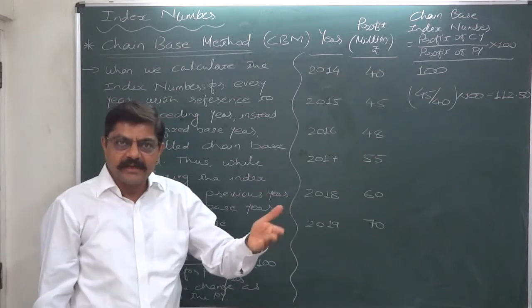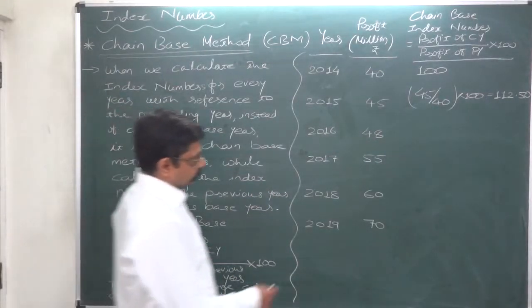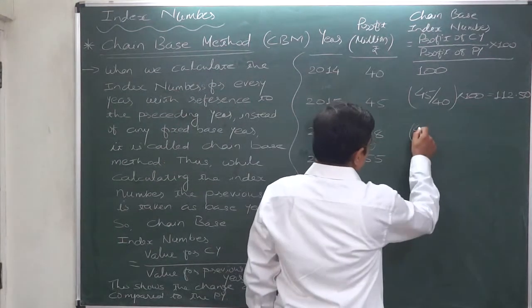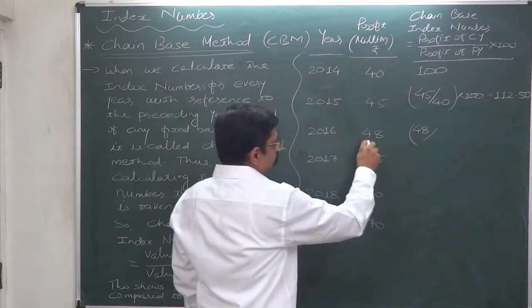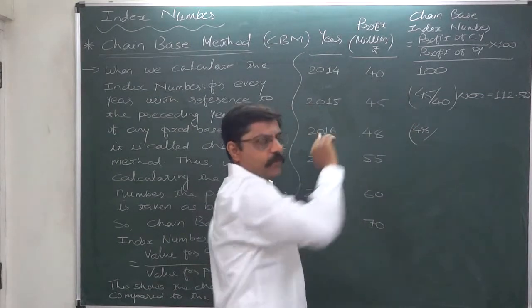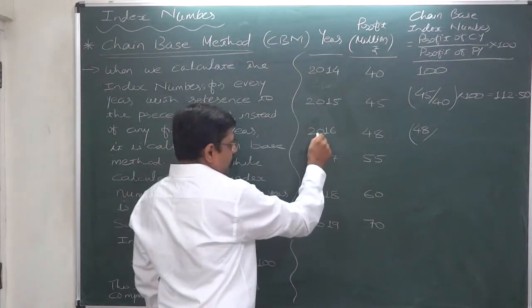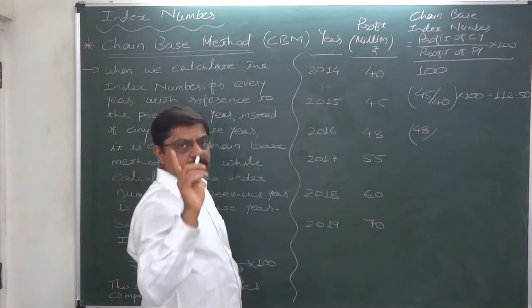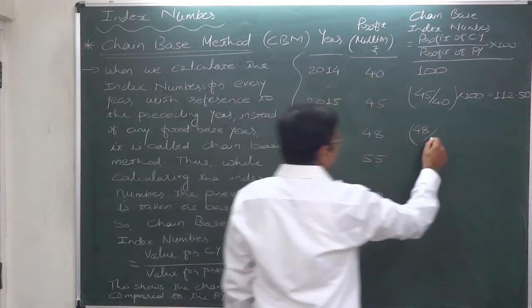Now in 2016, profit for current year is 48. Profit for Base year will not be taken as 40—this is not fixed Base method, this is chain Base method. So for 2016, 2015 becomes the Base year, so profit of 2015 will be the denominator.